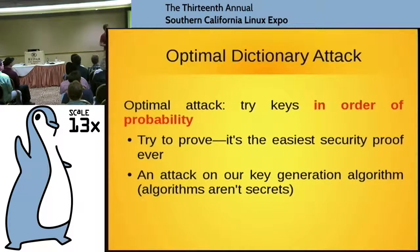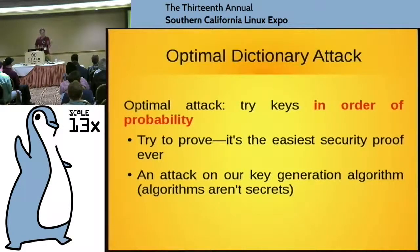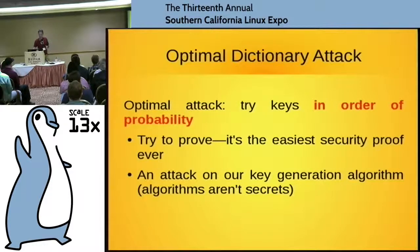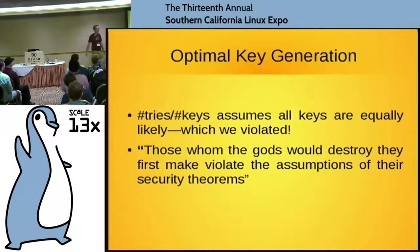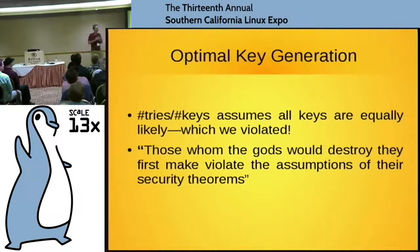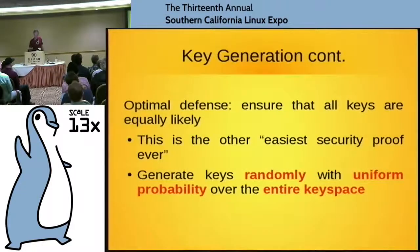So what went wrong is that when I calculated the probability of breaking it, that assumed all keys are equally likely — and I violated that very badly. This is some ancient wisdom: those who the gods would destroy, they first make to violate the assumptions of their security theorems. The point is: how do we defend against this? You have to satisfy the assumption I made — make all keys equally likely. How do you do that? You generate them randomly, with a uniform probability.